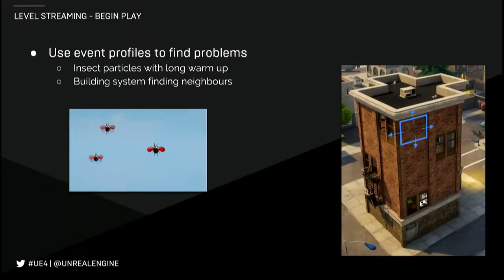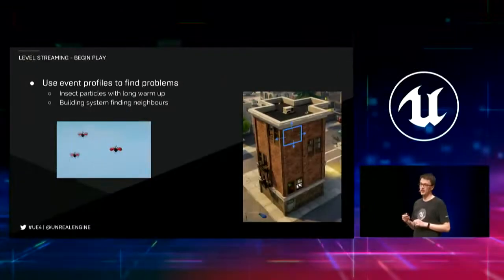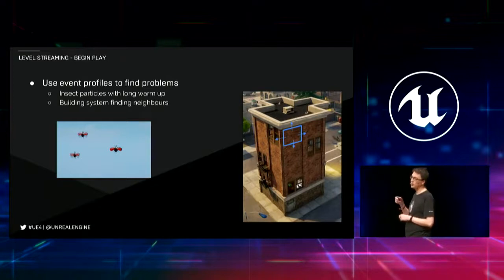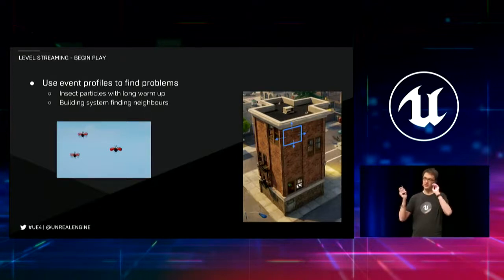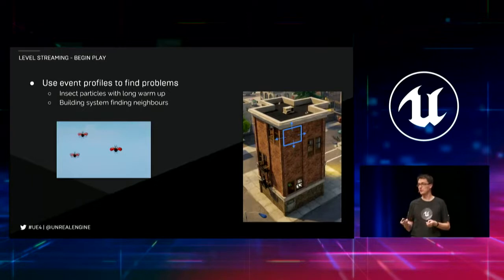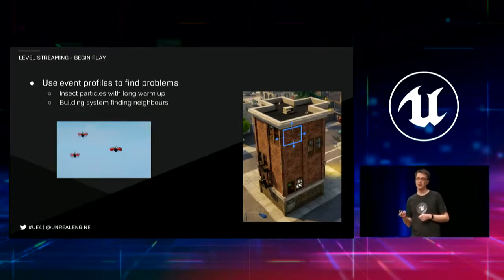Now looking at begin play — where we bring the gameplay logic up. One example was cool ladybirds that flap around the level, which had a long warm-up time causing a sudden block of work when brought into the game. That was quickly fixed by a word with the artist. Another aspect was the building system, which has to know all the neighbors — when you knock down something at the bottom, the whole building has to be destroyed, so there's a connectivity graph that has to exist. That was previously calculated when the level was loaded, which is quite expensive because it has to do collision tests to find neighbors. We changed it to be done at save rather than at load, and that was a big help.